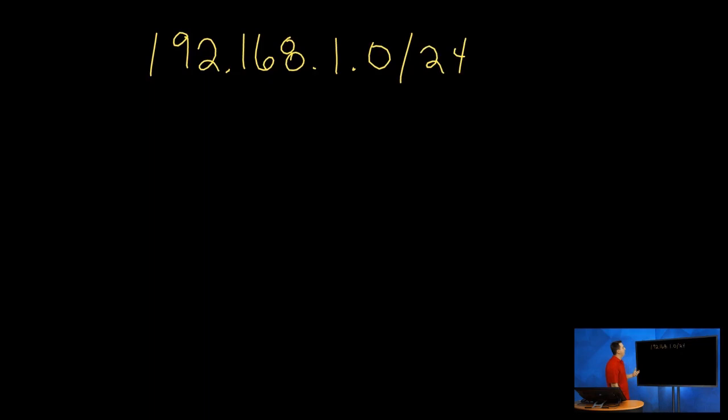I'm starting off with a /24 and what we want is 16 total subnets. So 16 total subnets, how do we get 16 total subnets? We go 2 to the power of 4 equals 16, so we have to borrow 4 bits in this scenario.